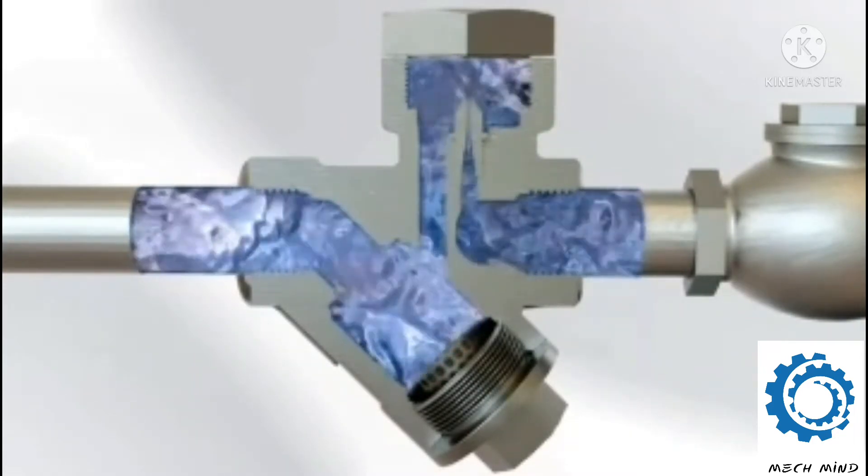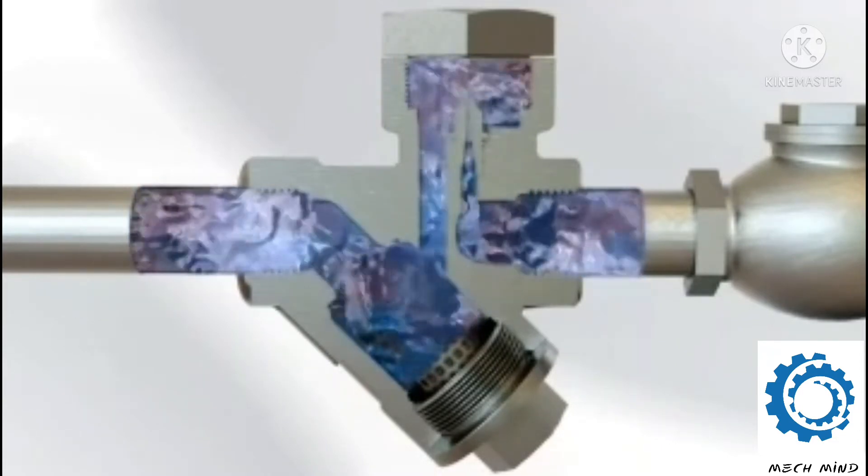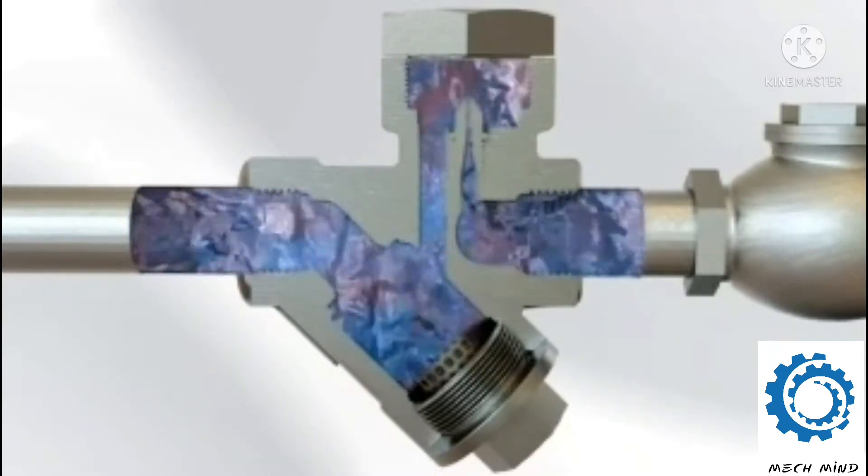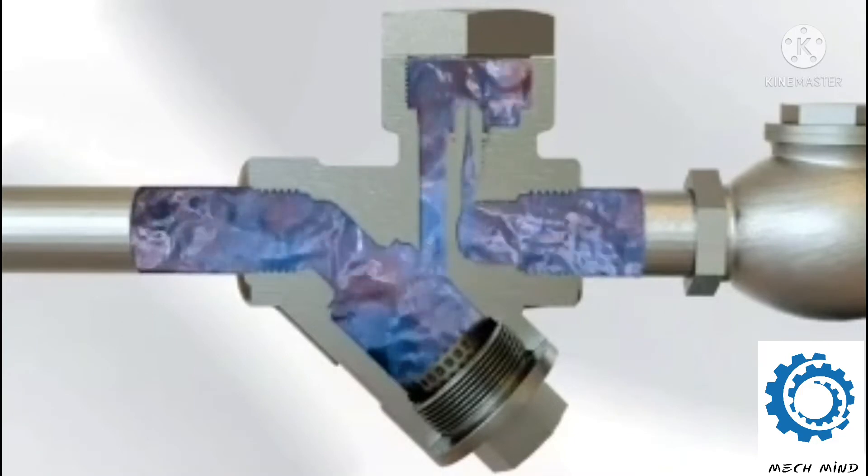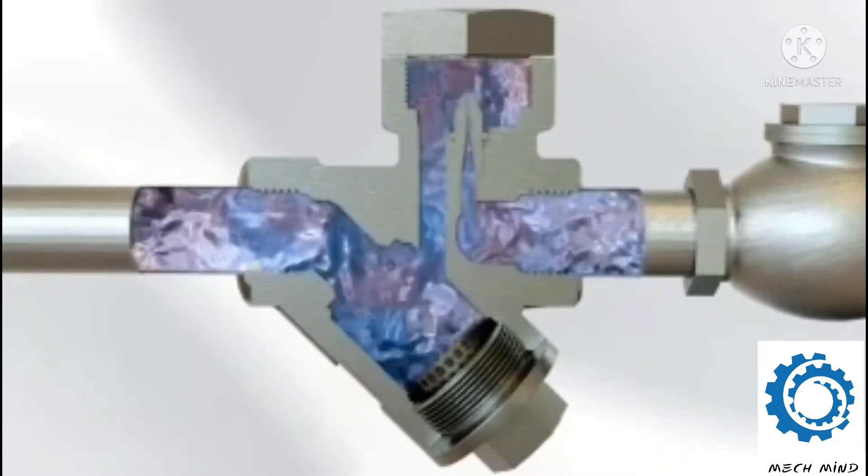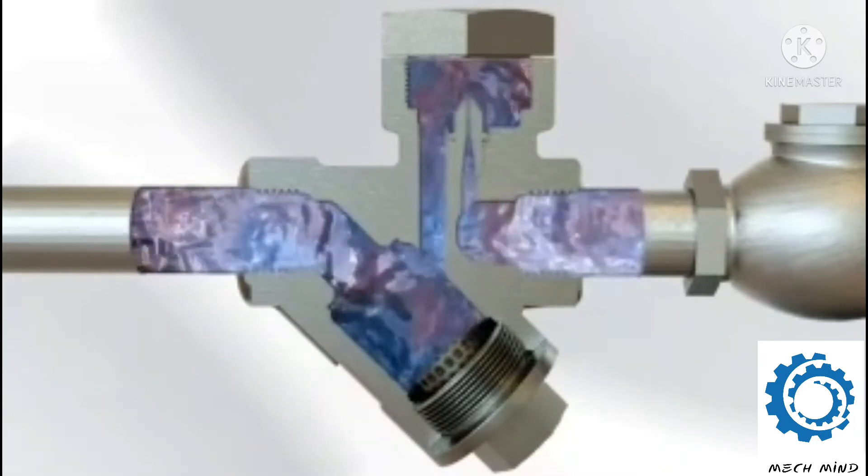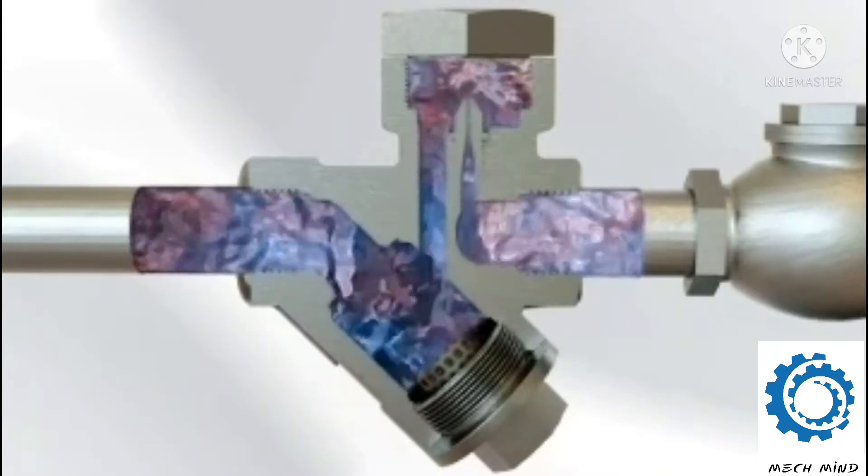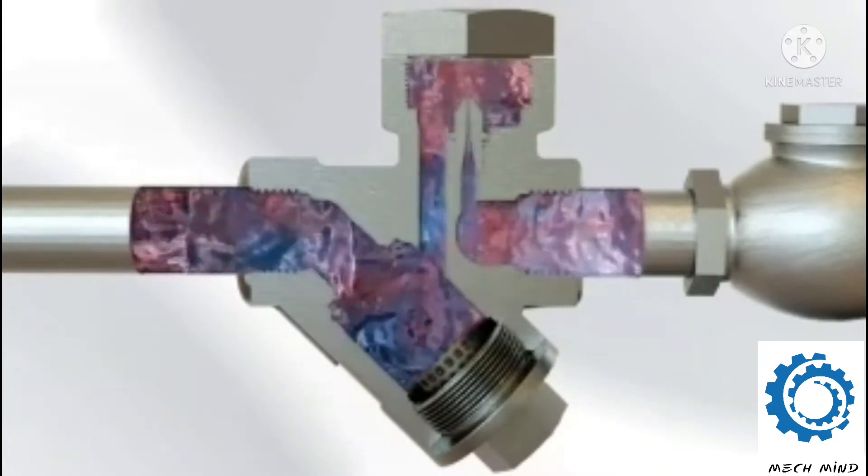Once all the cold condensate and non-condensable gases have been ejected, steam and hot condensate reach the delta steam trap. As the steam continuously condenses to hot condensate in the pressurized steam system, it is fed to the steam trap by the pressure in the system.